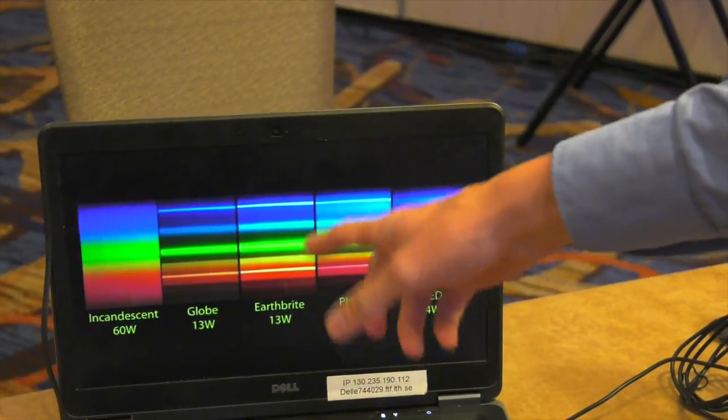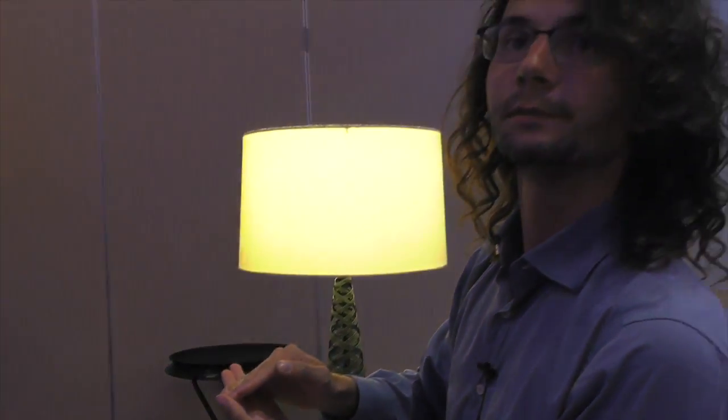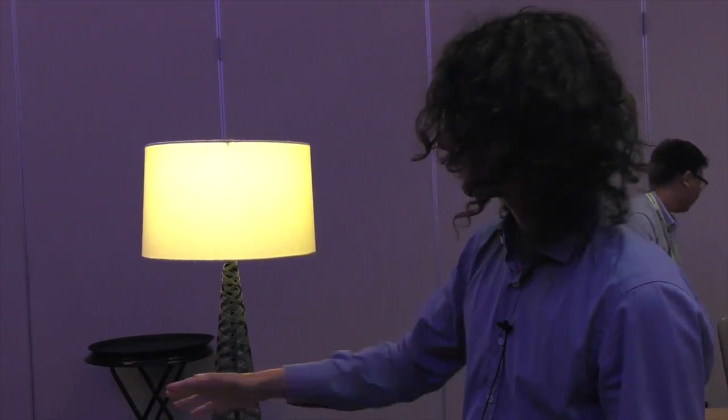Those are different models of fluorescent lamps, which have precise wavelengths. This means that the color of the lamp is not white, but it's kind of yellowish or greenish, depending on the combination.